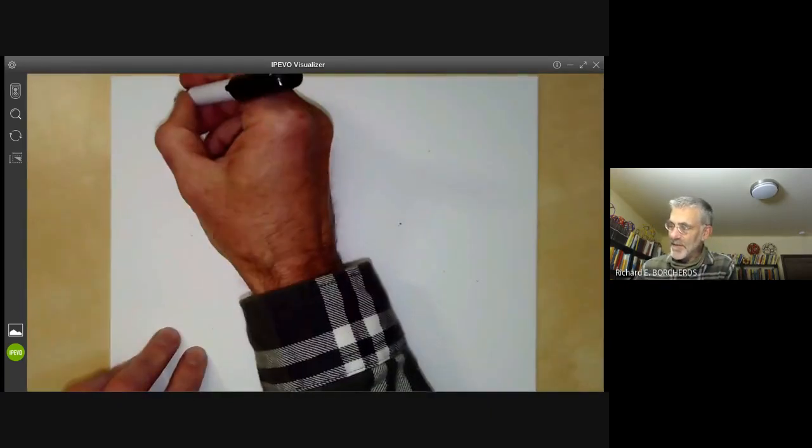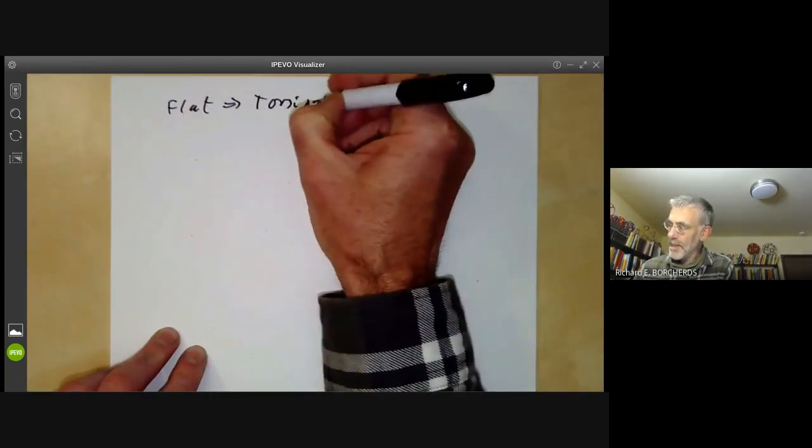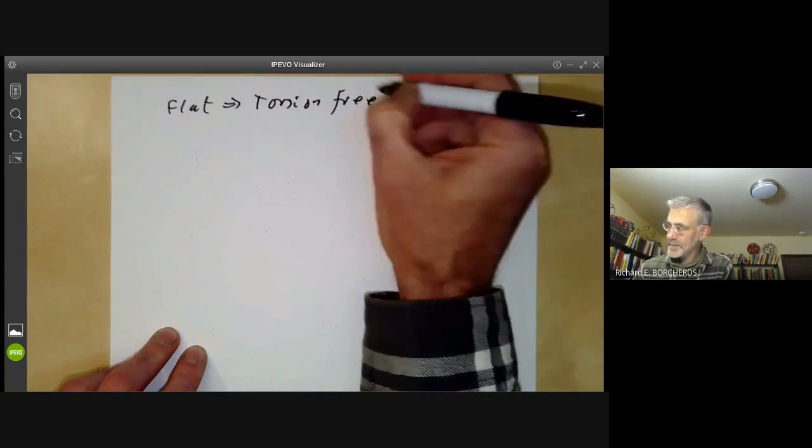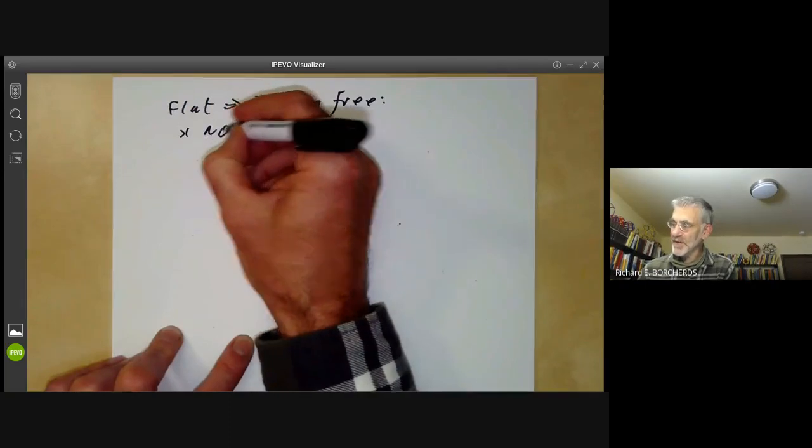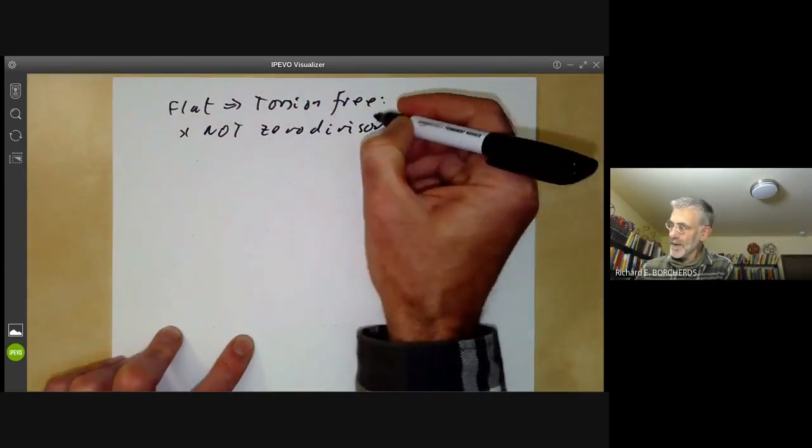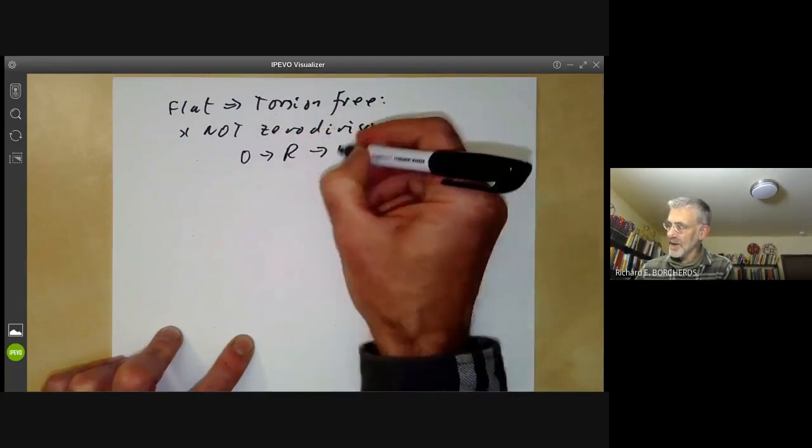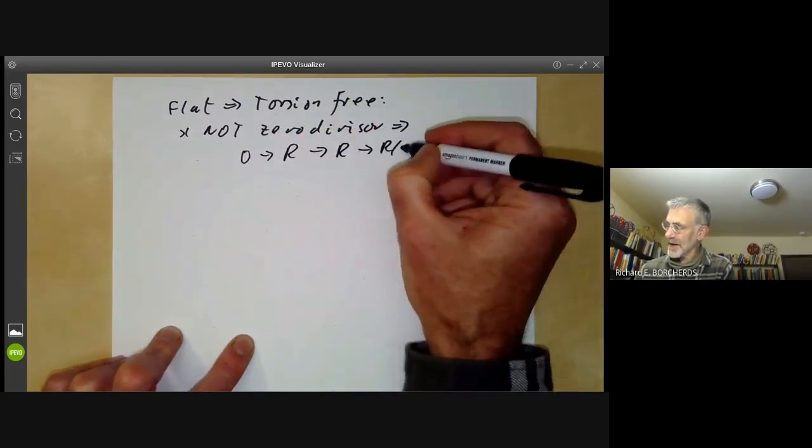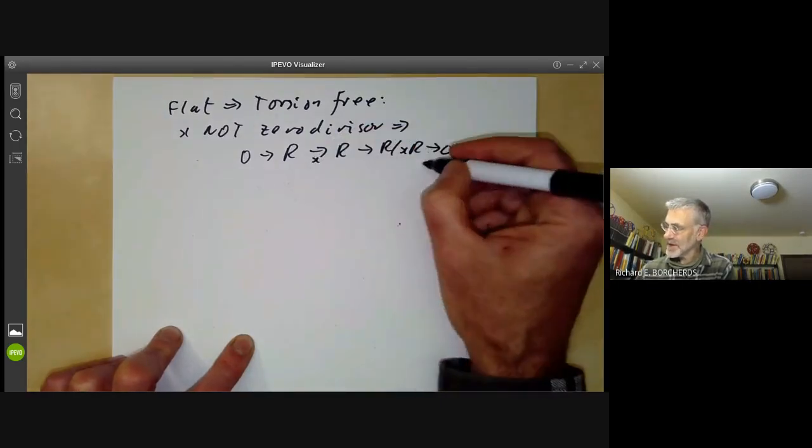Now we should check that flat implies torsion-free. This is quite easy because if X is not a zero divisor, this implies the sequence 0 → R → R → R/XR → 0, where this is multiplication by X, is exact.